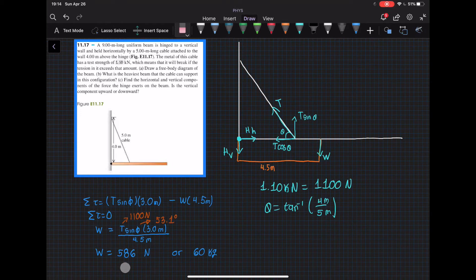We get our answer in newtons, but if we want our answer in kilograms like MasteringPhysics, we would just need to divide by gravity which is 9.8. We get 60 kilograms and that is the heaviest that the cable can support.